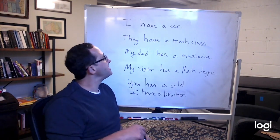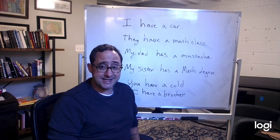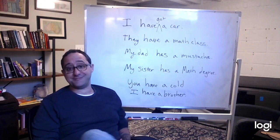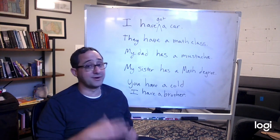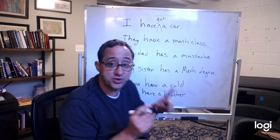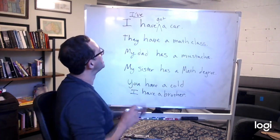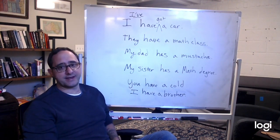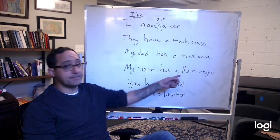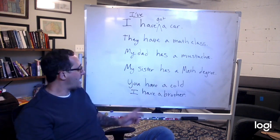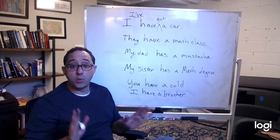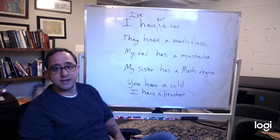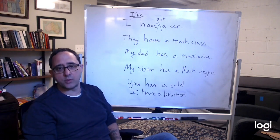Sometimes we'll contract these, but only when we use the word 'got.' So you'll sometimes hear someone say 'I have got a car' — that just means they have a car. This is common English; we don't write this but we say it, and when we do, we usually contract it: I've got a car. I've got a headache. I've got a math class. He's got a math class. He's got a math degree. He's got a cold. I've got a brother. I've got a car.